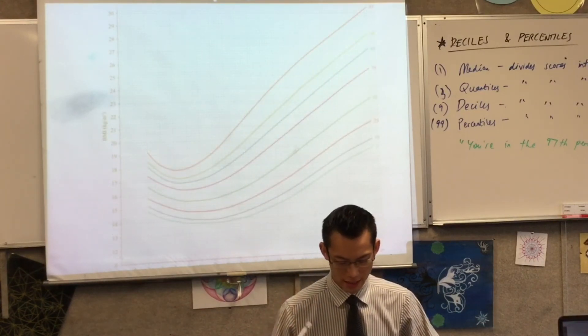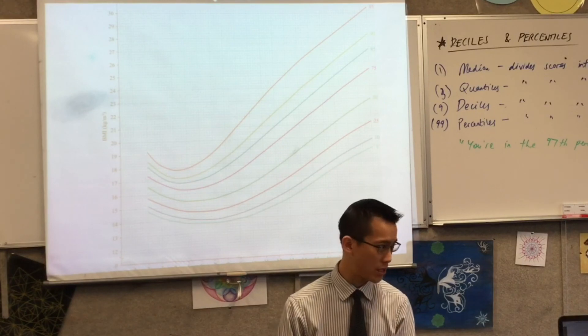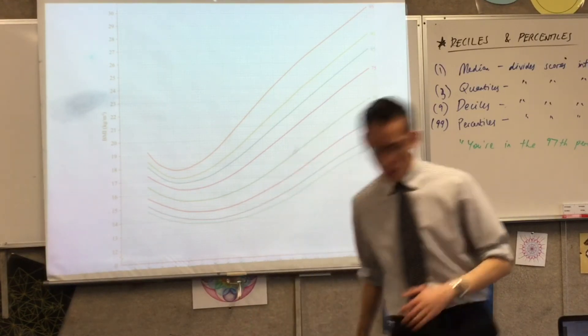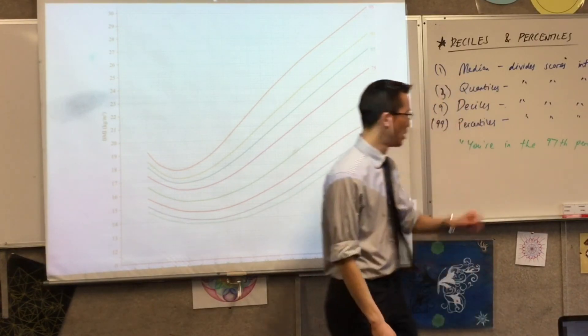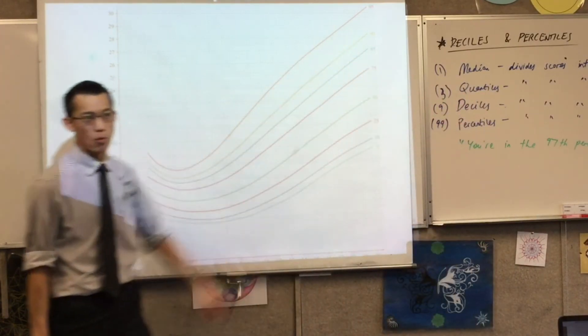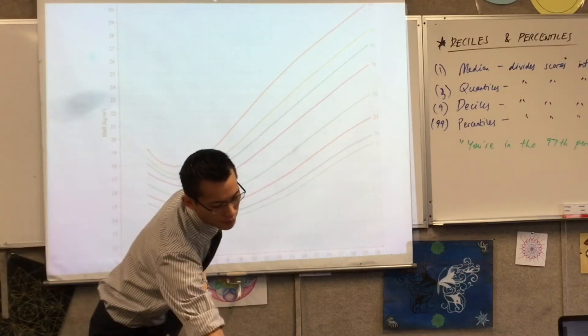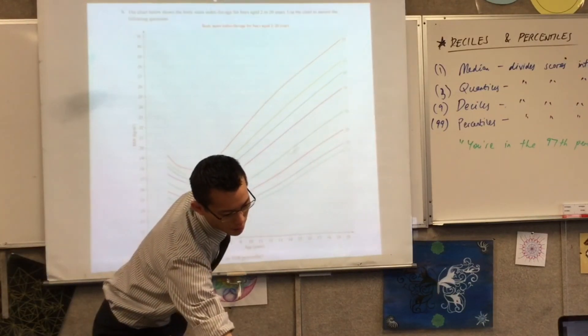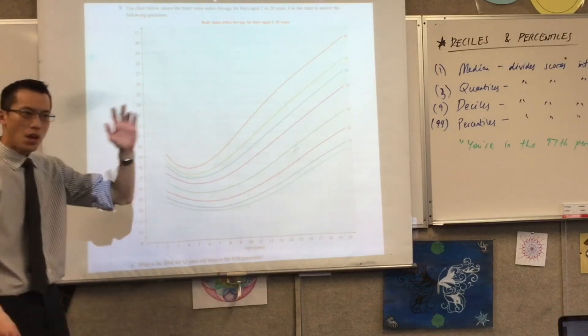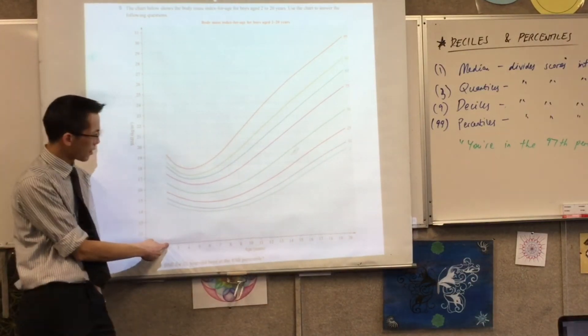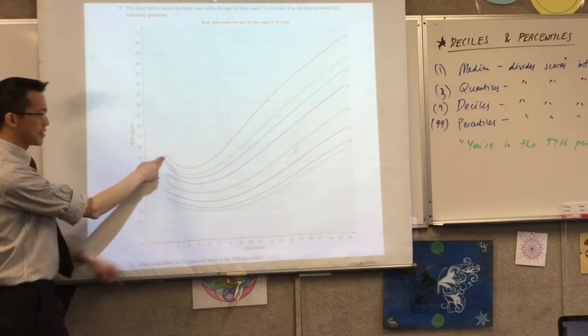What's the title of this graph? So we're looking for BMI for 2 to 20 year old boys slash men. Have a look at the axes you've got over here on the left hand side, that's the BMI going up. And then on the bottom, you've got age. So how old are these people?